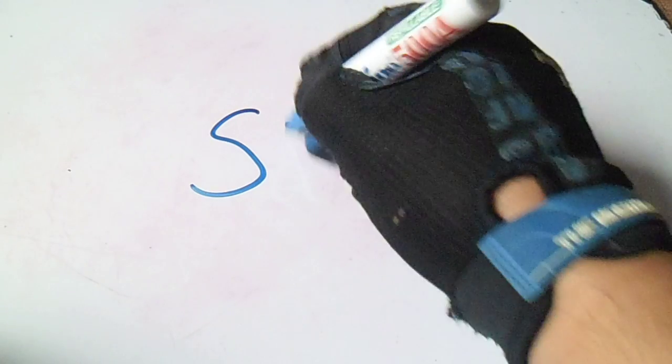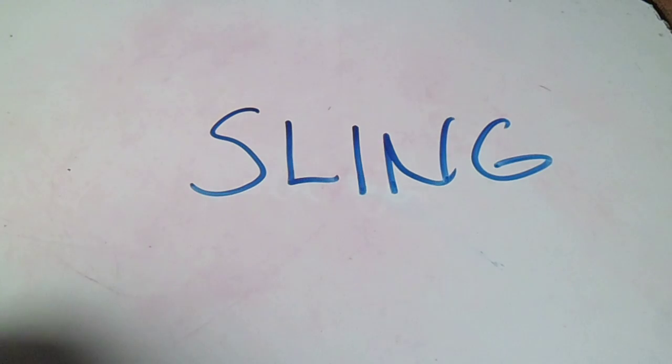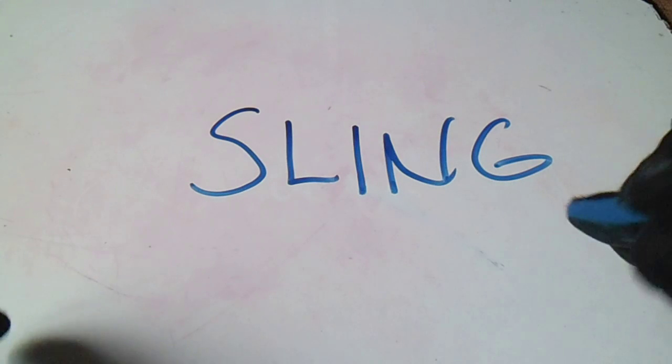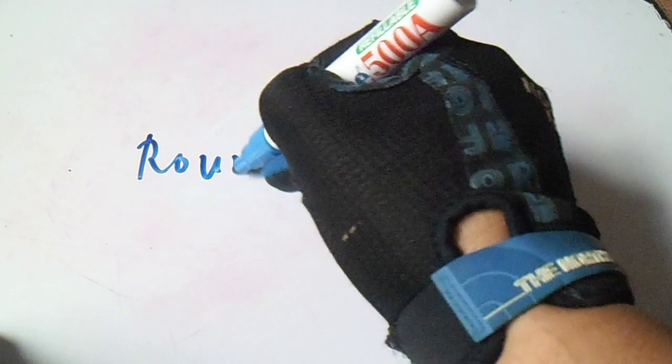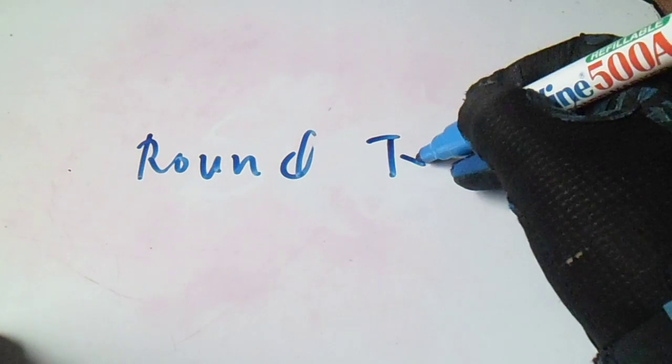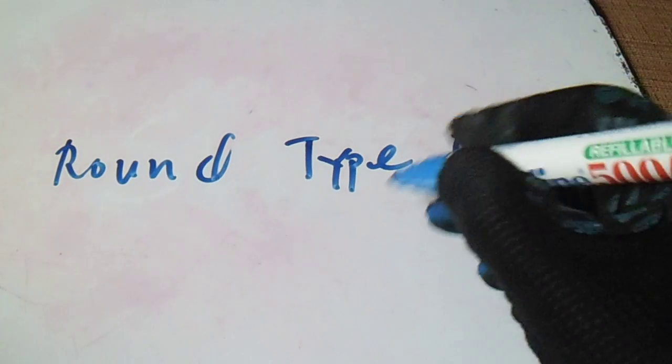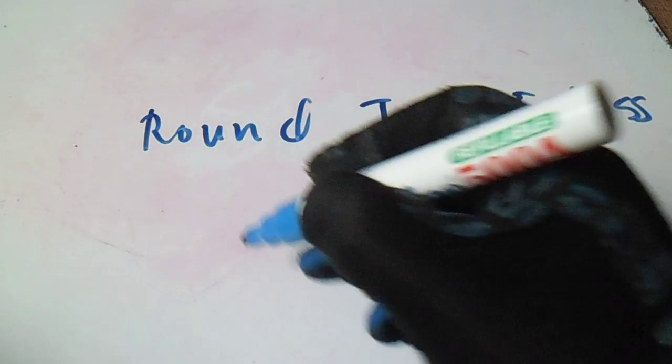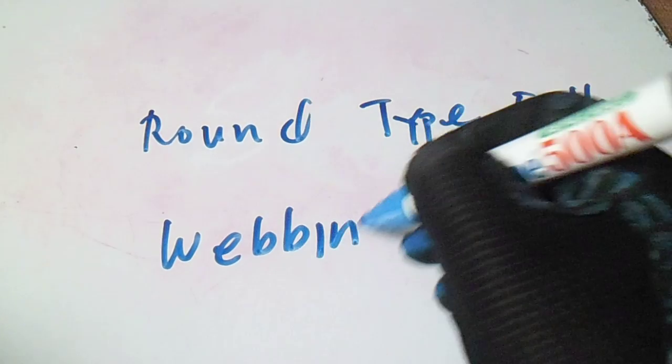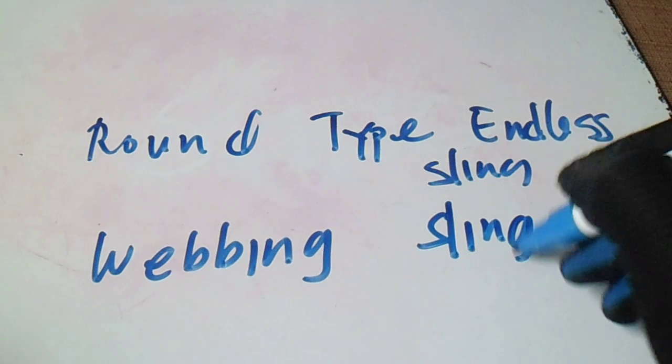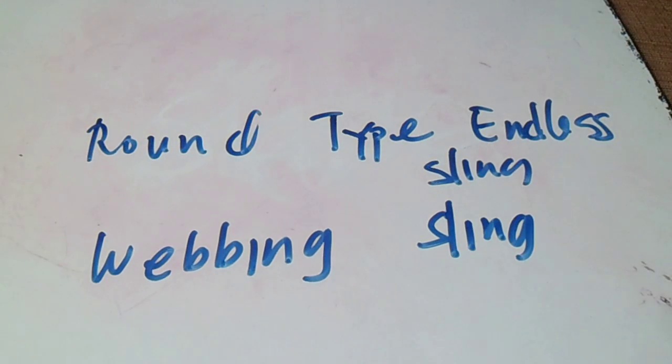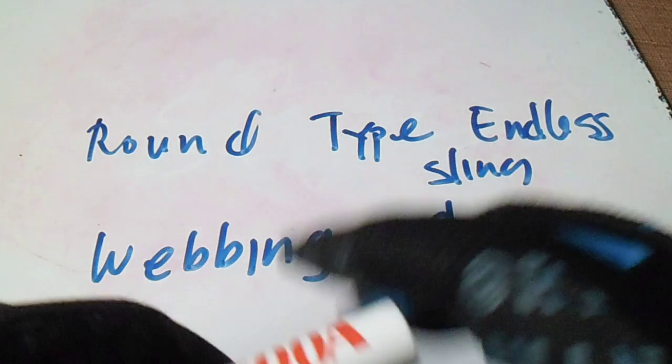Hi guys, welcome to Piping Welding and DT channel. This video is regarding slings. We have two types of sling: round type, endless sling, and webbing sling. From this sling, how to know the tons and also the color coding?